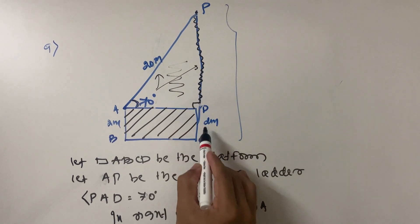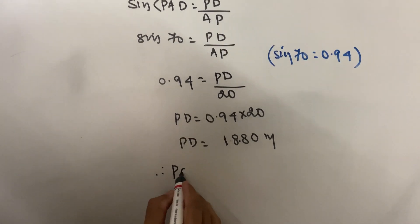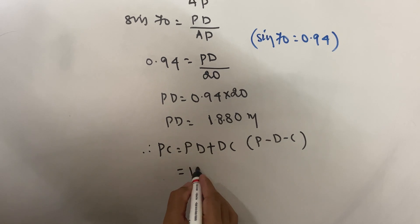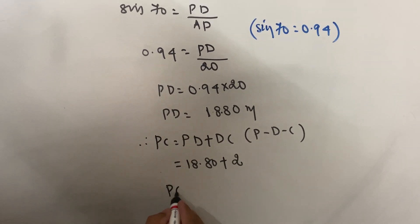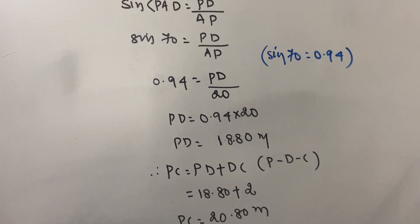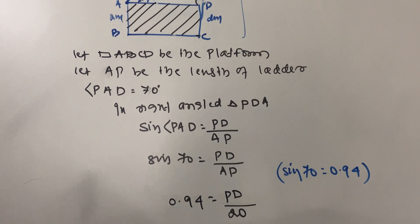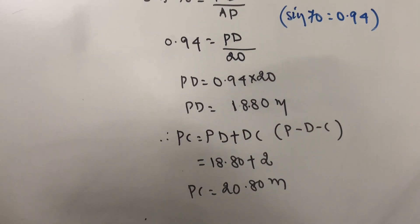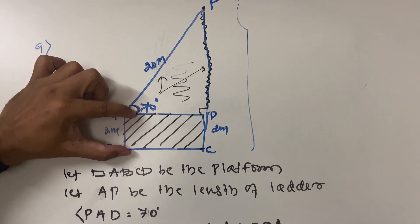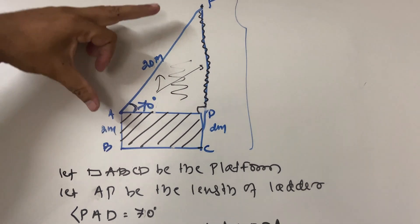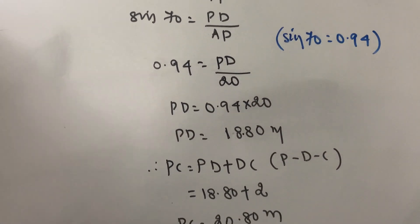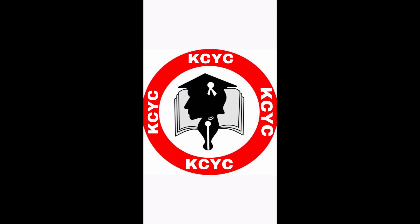PC = PD + DC = 18.80 + 2 = 20.80 meters. Therefore the maximum height from the ground where the ladder can reach is 20.80 meters. The diagram is very important: this is your platform, the ladder extends at 70 degrees, length 20 meters. Add both values to get 20.80 meters.